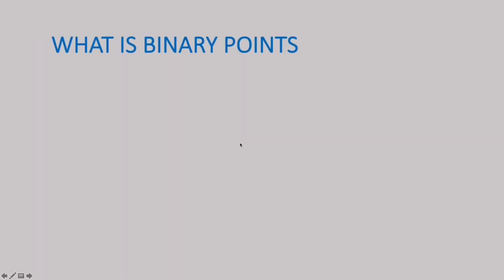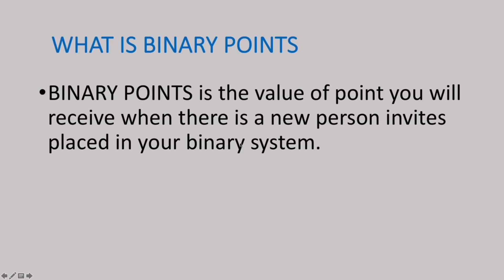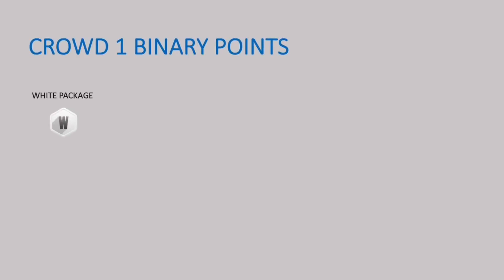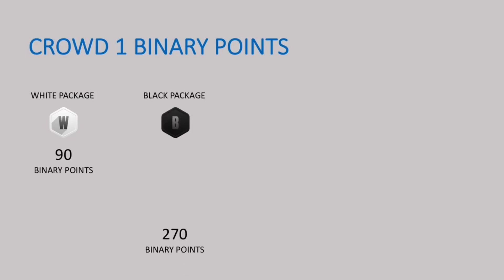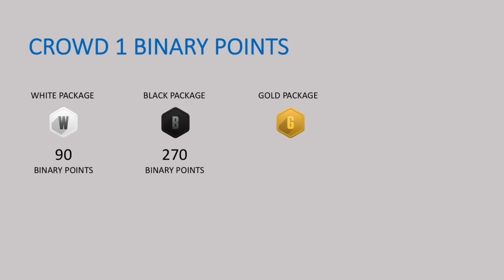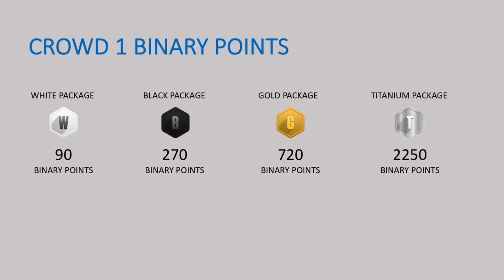Now let's talk about what binary points are. Binary points is the value of points you will receive when there is a new person invited and placed in your binary system. Here are the binary points for each Crowd1 package: white package gets 90 binary points, black package gets 270 binary points, gold package gets 720 binary points, and titanium package gets 2,250 binary points.